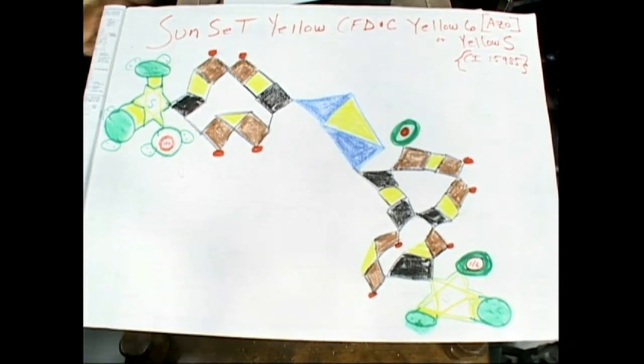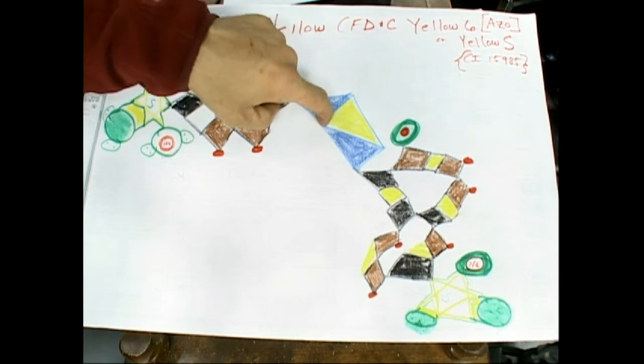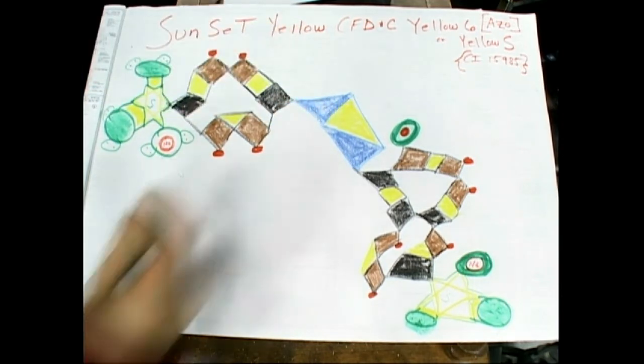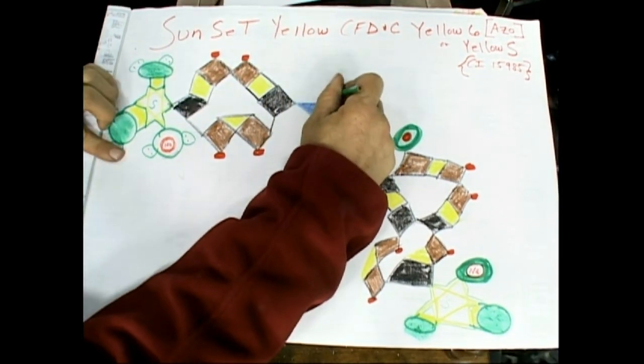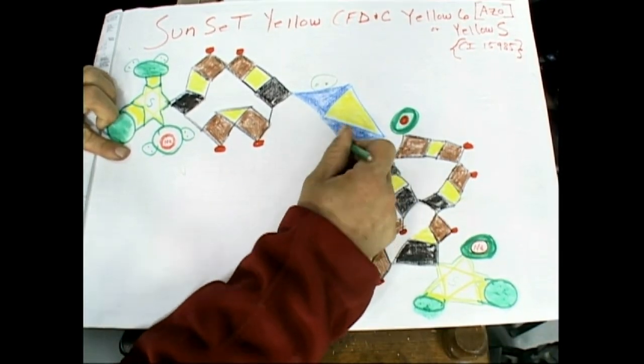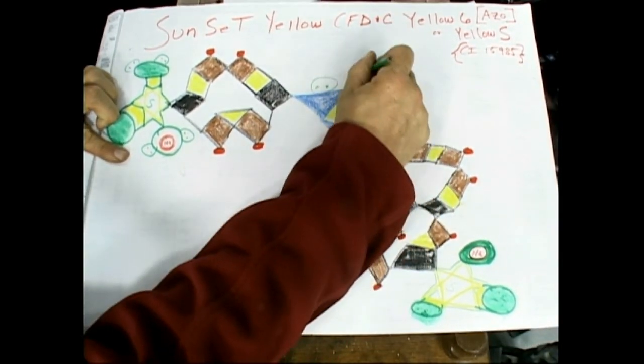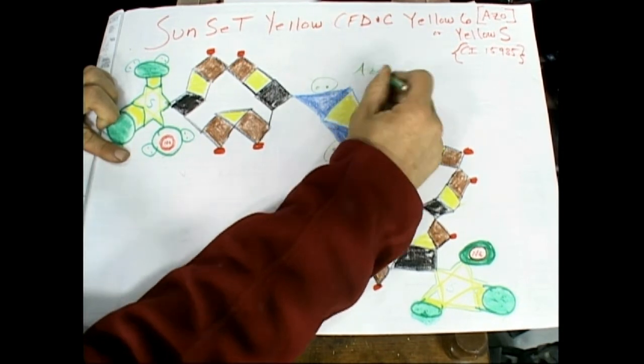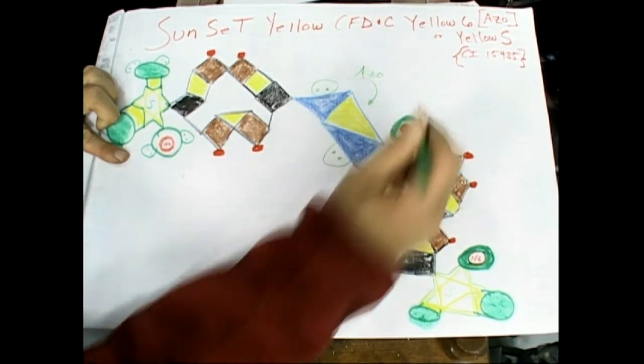There you go, that's your yellow food dye, yellow food coloring. It's probably going to split up there. Draw the aliens in - that's that azo double nitrogen in there.